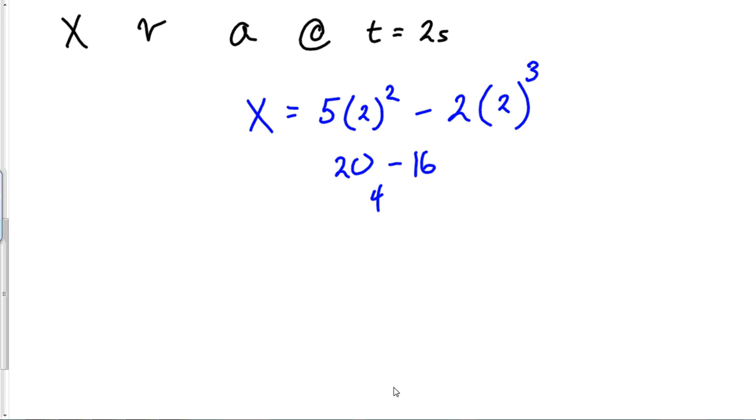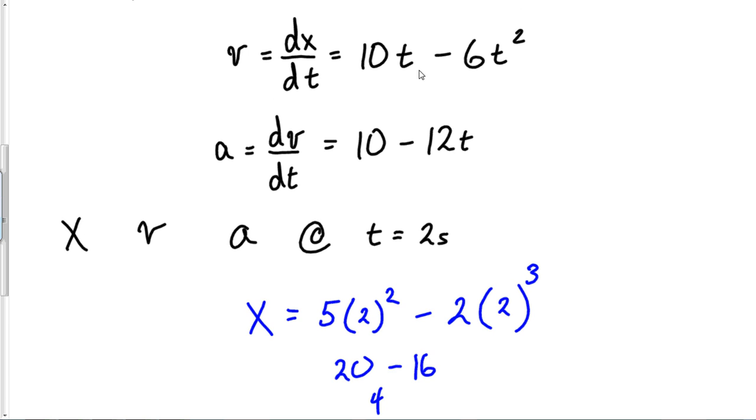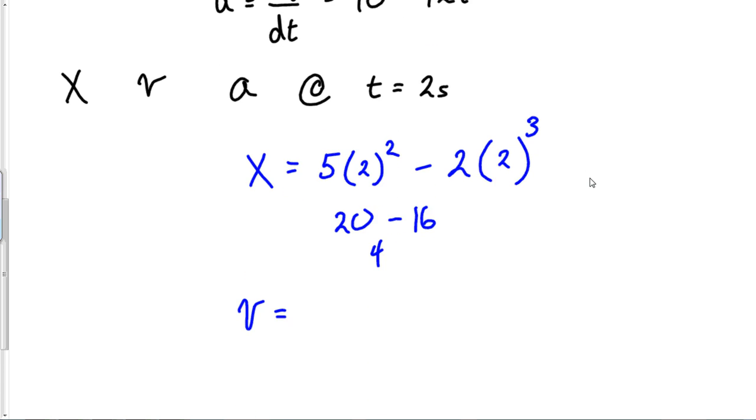What else could I potentially do? We could find the velocity. If I want to find velocity, I'll go back to that velocity equation 10t - 6t². So 10 times 2 minus 6 times 2². So we've got 20 minus 24, which means my velocity is negative 4.